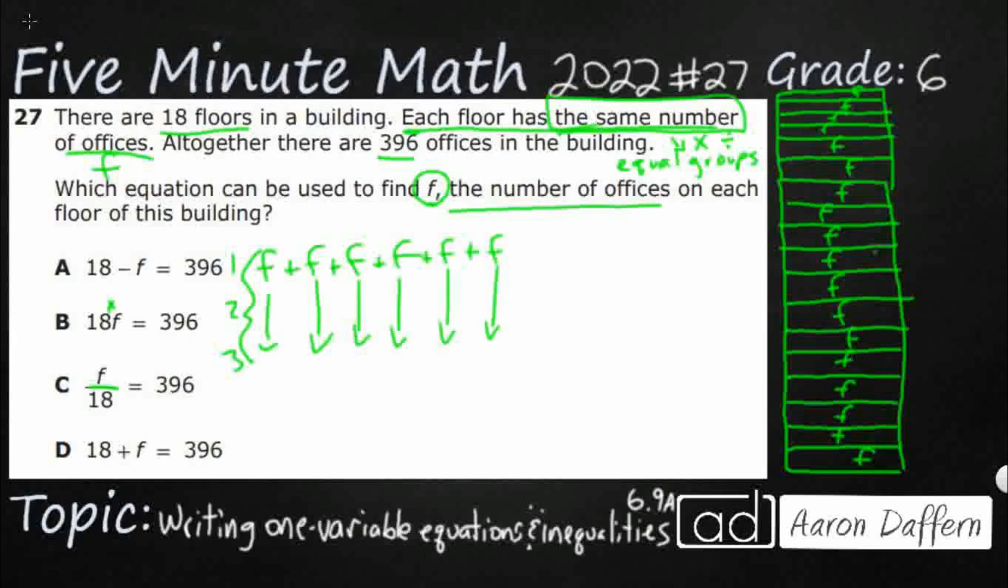But when I said repeated addition, you're probably thinking, oh, that's another form of multiplication. And if you thought that, you are correct. Why would I want to add f 18 times when I can just do 18 times f? Because my total here, they already told me, is 396. So 18 times f is going to give me 396. And if I need to, I can divide both sides by 18 to figure out what f is. And so I said 18 times f. But remember, sometimes I can just write 18 and f next to each other. So my answer here is B.